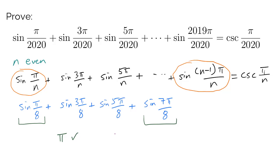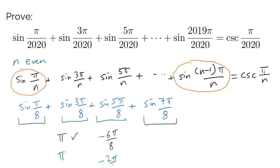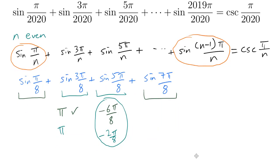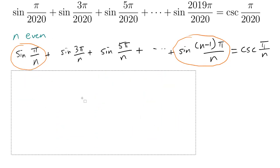If we try the inner pair, sine of 3 pi over 8 and sine of 5 pi over 8, the sum is pi again but the difference is only negative 2 pi over 8 — not the same as before. So we don't get a clean simplification from pairwise sum-to-product. There may be a way to finish using sum-to-product and I leave that as a challenge, but the method we'll use in this video is something different.